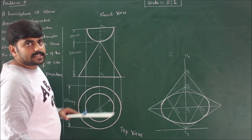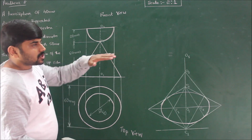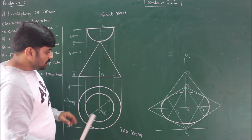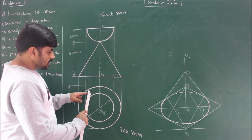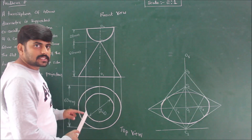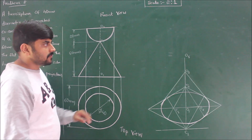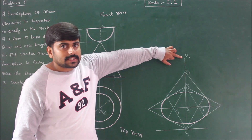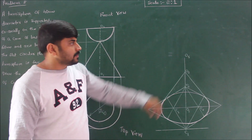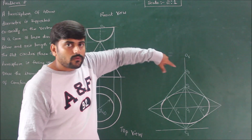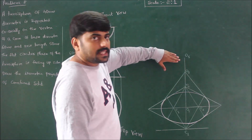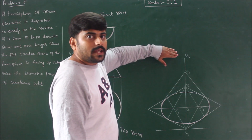At center O3, consider the top face of the hemisphere. Since the flat face is facing upward, the top face is a circle of diameter 40 mm. Enclosing it in a square gives a square of side 40 mm × 40 mm. With O3 as center, construct a square of side 40 mm × 40 mm, which is four boxes × four boxes. Construct the grid at center O3 to do that.